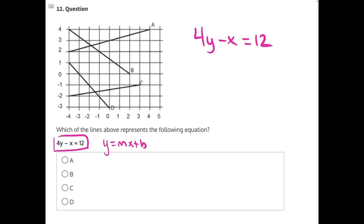Starting with x, x is being subtracted, so we need to do the opposite and add it to both sides. These will cancel, giving us 4y equals x plus 12.